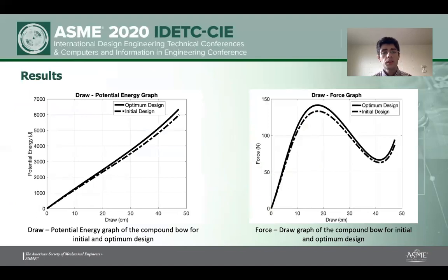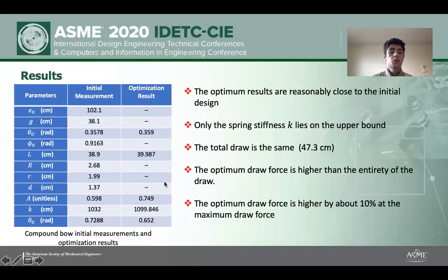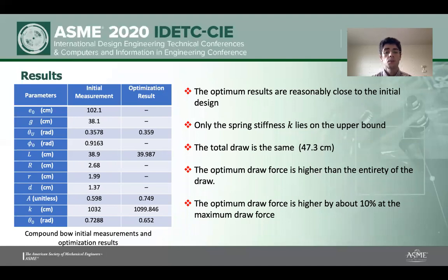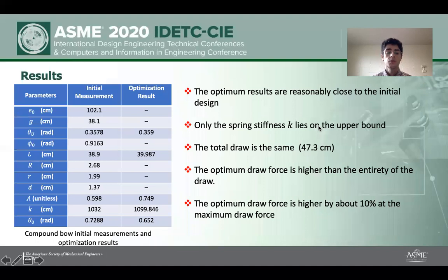After using the SQP optimization method in MATLAB, we received these two graphs. On the left side, you can see the draw force and potential energy graphs — the optimum design has higher potential energy than the initial design. On the right side, you can see that the draw force of the optimum design is about 10% higher than the initial design, which makes sense because applying more force yields more potential energy. Checking the results table, we only optimized five design variables, and the optimum results are very close to the initial design. Only the spring stiffness lies at the upper bound. The maximum force is almost 10% higher than the initial design with only slight differences in other variables.